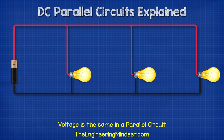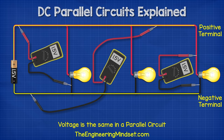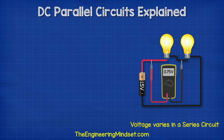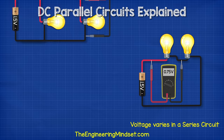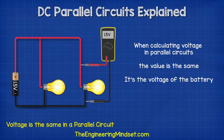In parallel circuits, the voltage is the same anywhere in the circuit. It doesn't matter if we connect our multimeter here, here, or here — we get the same reading. Why? Because each component or path is connected directly to both the positive and the negative terminals of the battery, so they receive the full pressure. In series circuits, the components were connected to each other so the voltage reduced. But with parallel, there are multiple routes and each is connected directly to the battery. So when we use voltage in the formulas for parallel circuits, it's super easy because it's the same value — it's just the voltage of the connected battery.